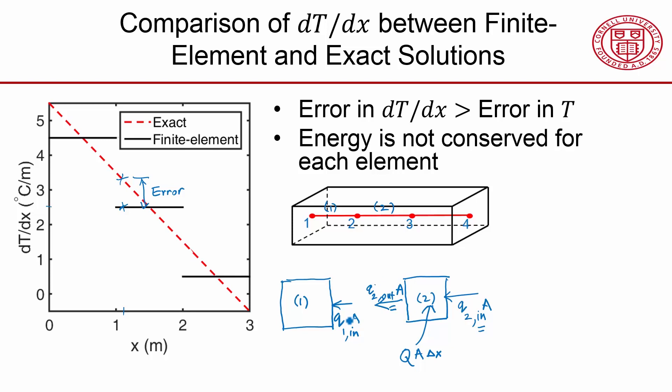according to physical reasoning, but it's not so in a finite element solution. And you can show that that difference is exactly equal to the heat being generated in the element. So it's taking the heat being generated in the element and adding it to the heat going in through the face of the adjoining element. That's non-physical, which means that energy is not conserved for each element.